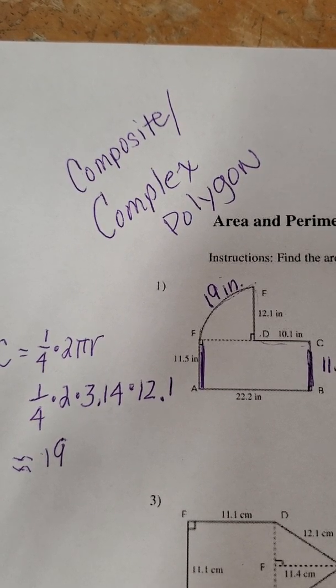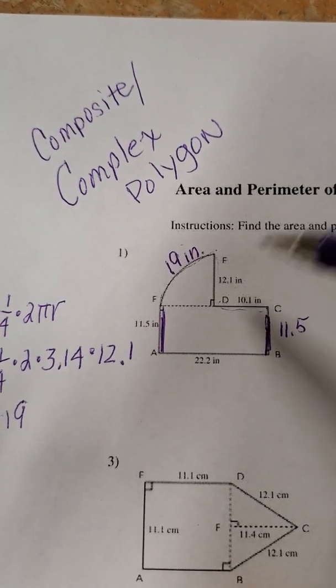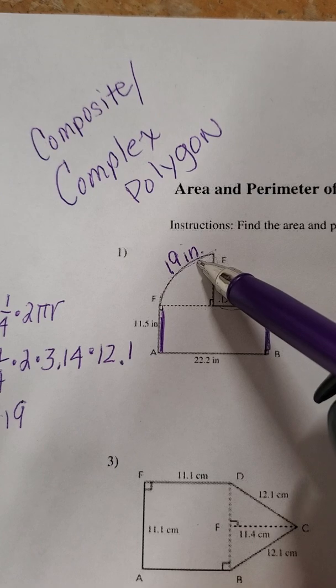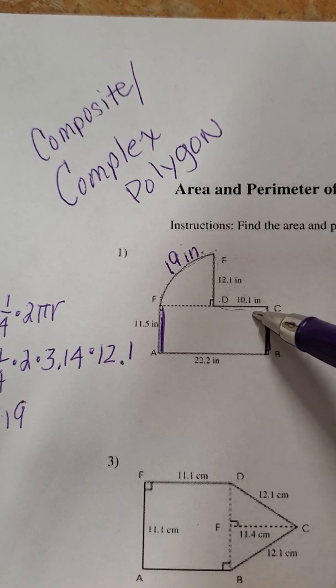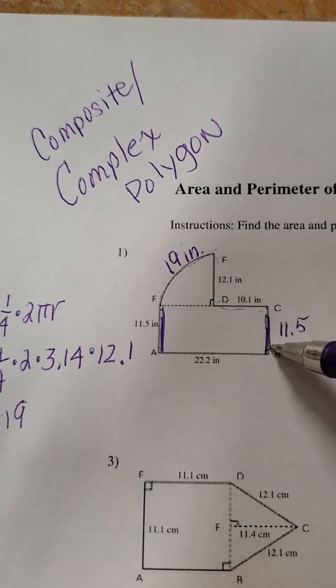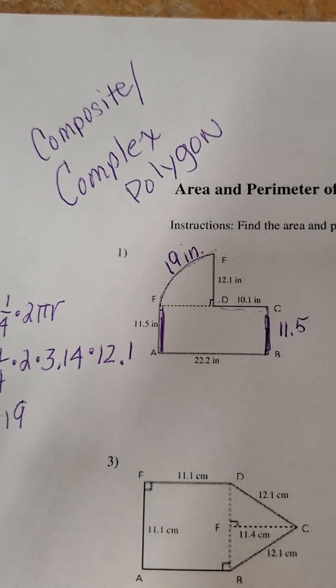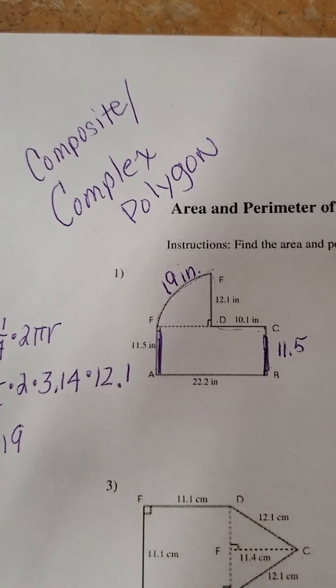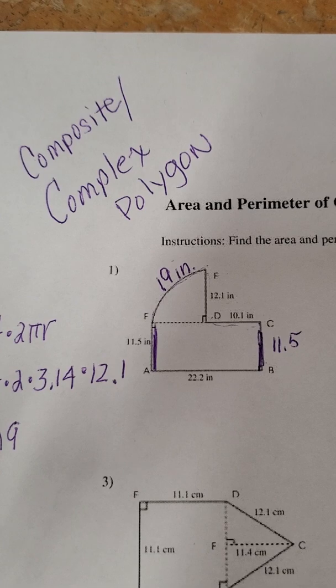So to find the perimeter of the whole thing we're going to add up all of those numbers that we have right. We want to add up the 19 with the 12.1, 10.3, 11.5, 22.2 and another 11.5. So let's add that up and see what we get. Again you can pause the video if you want but I'm adding right now.